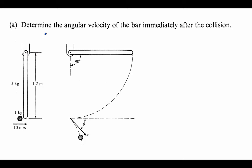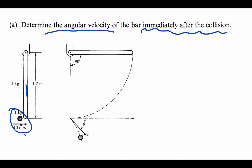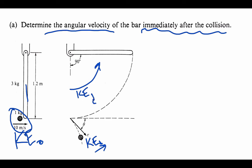Part A asks us to determine the angular velocity of the bar immediately after the collision. Can we use kinetic energy conservation to solve this directly? The problem is we'd have the initial kinetic energy equal to the kinetic energy of the ball moving plus the kinetic energy of the bar rotating — but we don't know the ball's final speed. So we can't use that to find the bar's angular velocity directly.